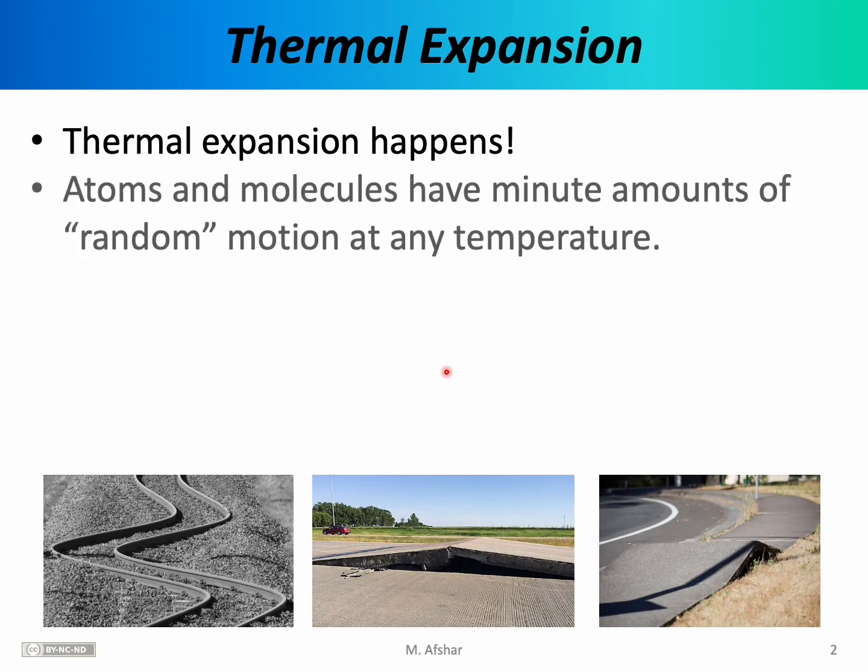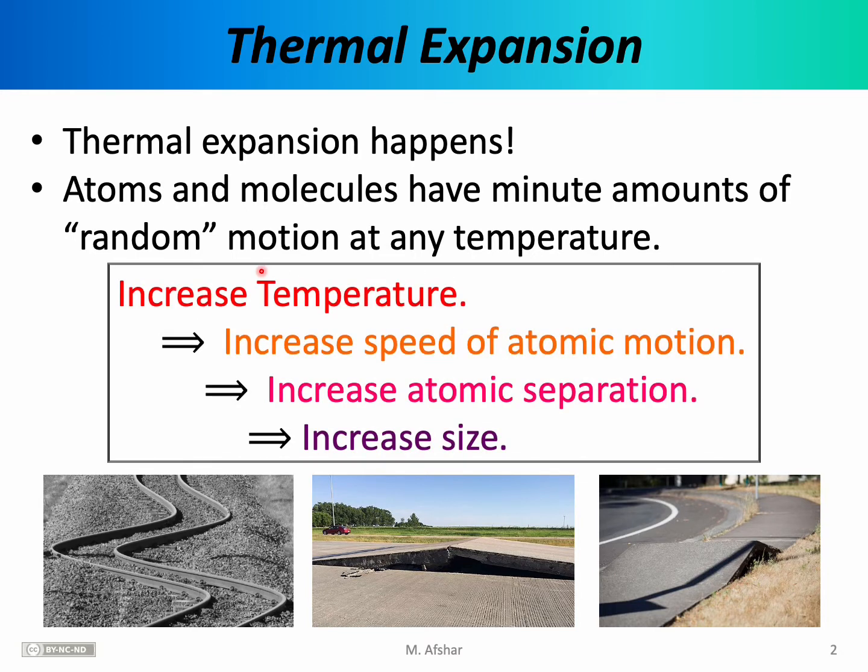To better understand thermal expansion on a microscopic basis, we first have to realize that the atoms or molecules of an object always have minute amounts of random motion regardless of the temperature of the object. This is true even of solids. So even if you look at a solid piece of steel, the atoms and molecules in that piece of steel have some amount of random motion.